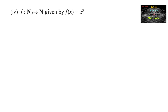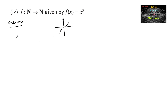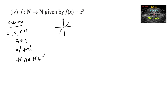Now let's see the fourth one: f from ℕ to ℕ, natural numbers to natural numbers, defined by f(x) = x³. First let's check one-to-one. For x₁, x₂ ∈ ℕ such that x₁ ≠ x₂, their cubes are also not equal. Therefore f(x₁) ≠ f(x₂), and hence f is one-to-one, or injective.